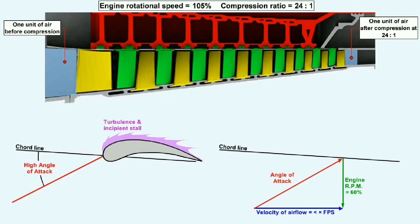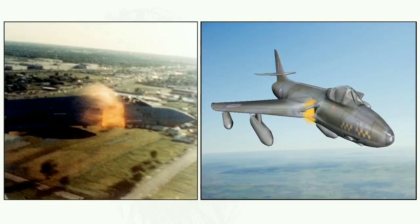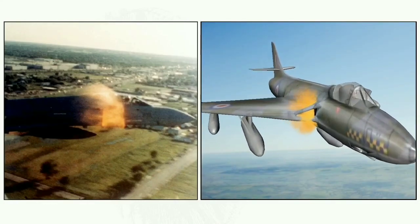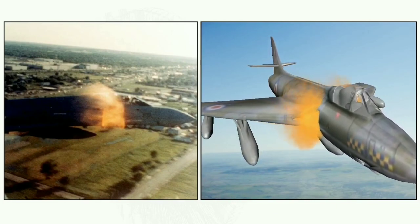The reduction in axial velocity happens throughout the compressor and can reach a point where turbulent airflow and a phenomenon called stall may occur. Stall is a partial breakdown of the airflow through the engine and is a progressive condition which, if not checked, may produce an event called surge. Surge is a total breakdown of the airflow through the engine which can, in the worst case, cause the airflow to instantaneously reverse its direction of flow.